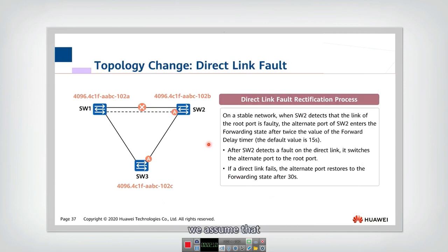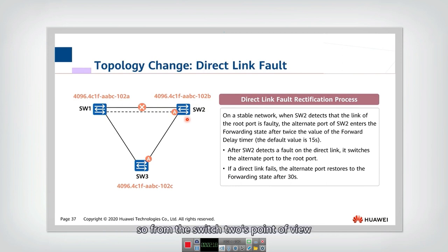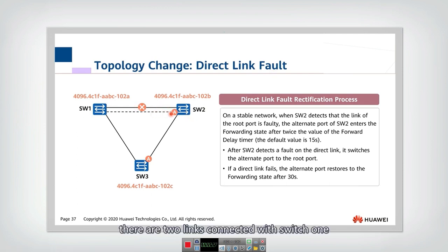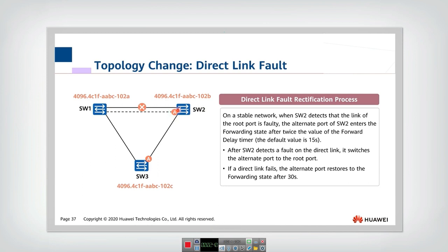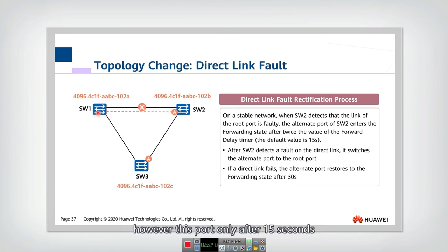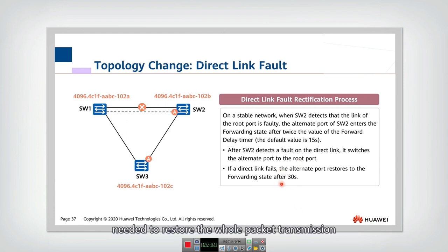Now let's look at another kind of failure: a link failure directly connected to switch 2. From switch 2's point of view, this is a direct link fault. We assume there are two links connected to switch 1. If this link fails, then after 20 seconds switch 2 latches the alternate port as the root port. This port then needs 15 seconds to enter learning state and another 15 seconds to enter forwarding state — but since the alternate port transitions directly, the total recovery is 30 seconds.